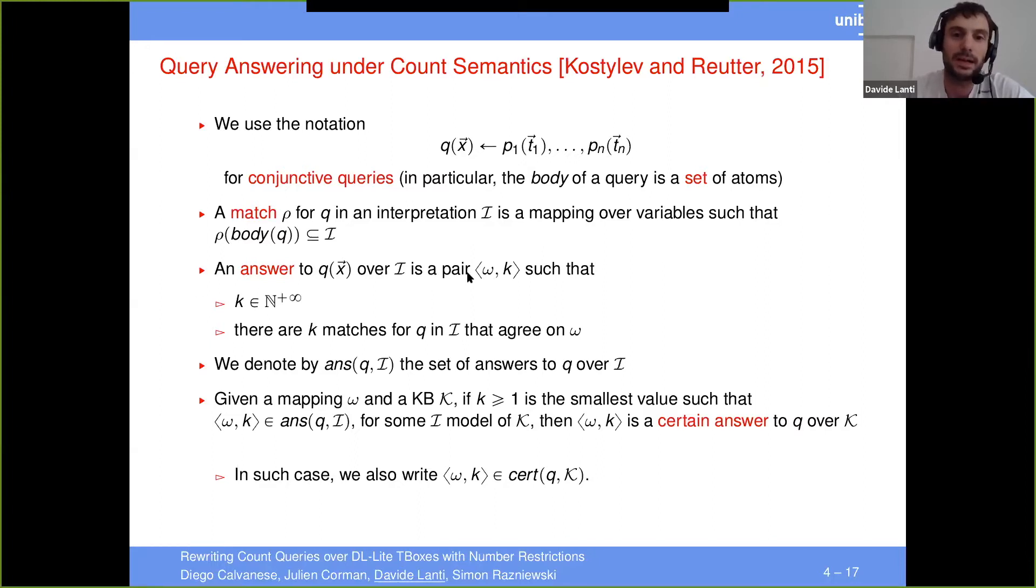And then here, an answer is a pair omega k. So this is different from the interval that Quentin was saying before. Here, we just consider the least value. So this k is a natural number. And this means that there are k matches for Q in I that agree on the answer omega. So you can imagine this omega is the mapping of the distinguished or answer variables. And then this k matches somehow agree with this answer.